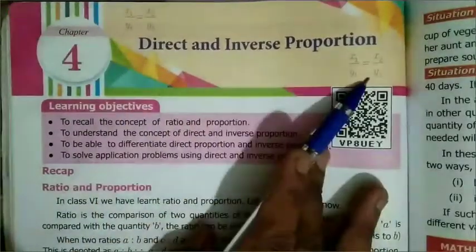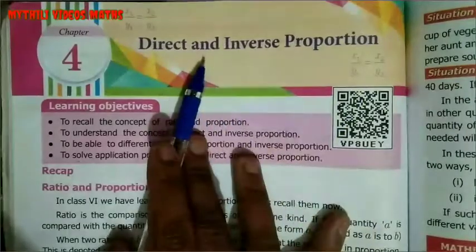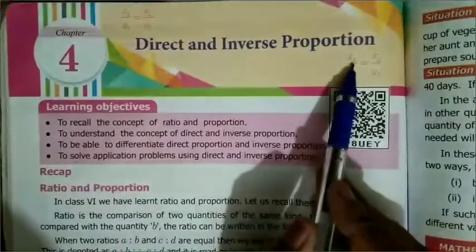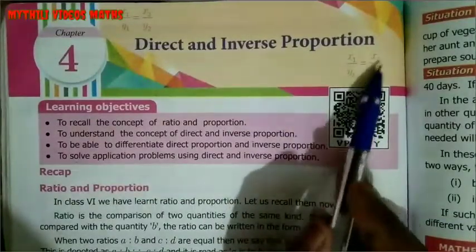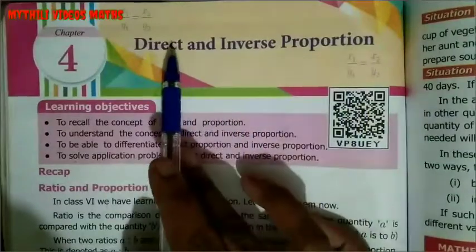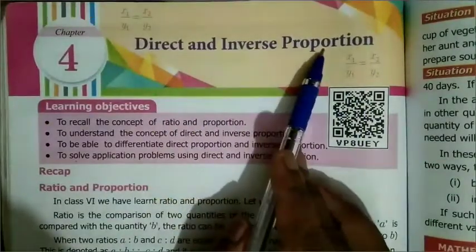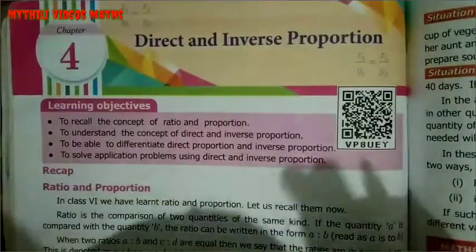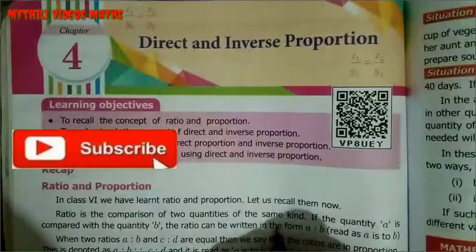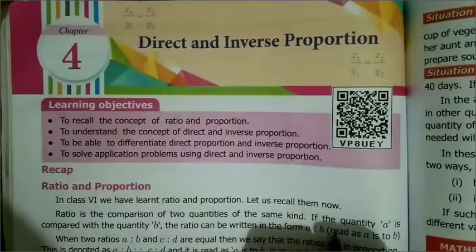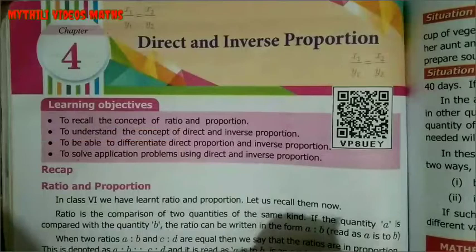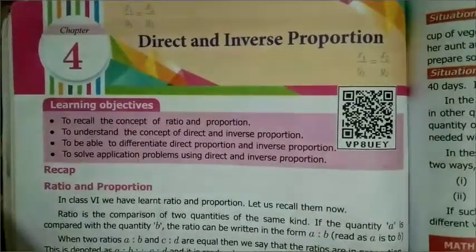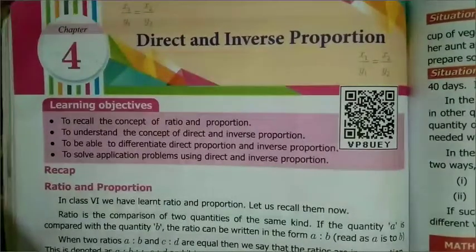Direct and Inverse Proportion. So x1 by y1 is equal to x2 by y2. Suppose we have the cost of 1 pen. Suppose we have 5 pens — 5 pens is equal to x5, 5 pens cost is x25.